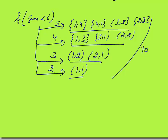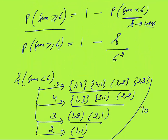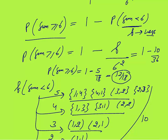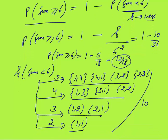So probability of sum ≥ 6 equals 1 minus 10 by 36, which equals 1 minus 5 by 18, which equals 13 by 18. So 13 by 18 is the final answer for the probability that the sum is greater than or equal to six.